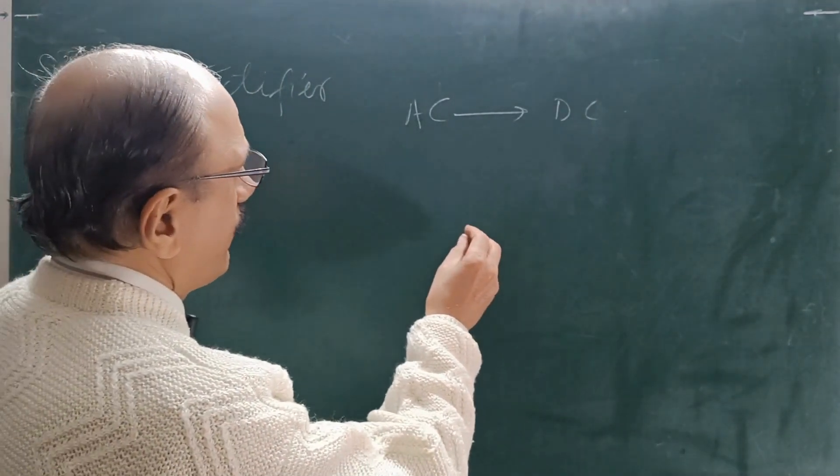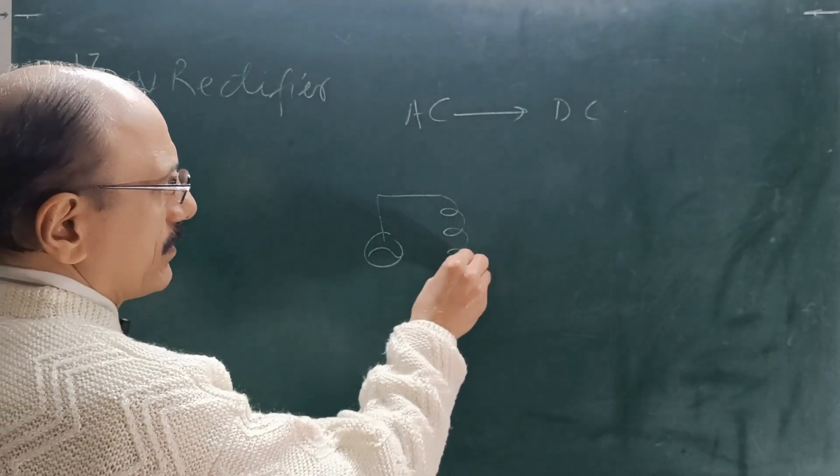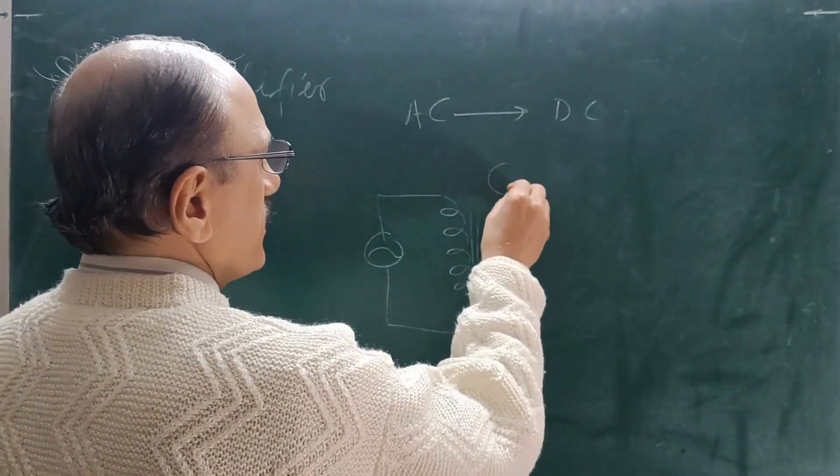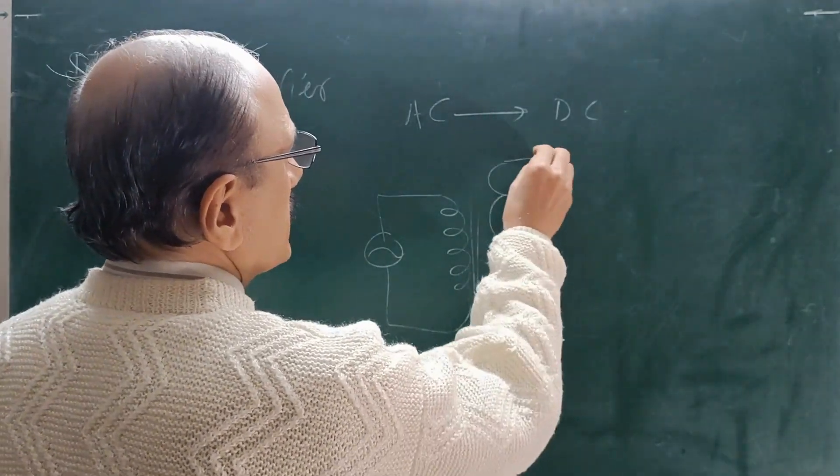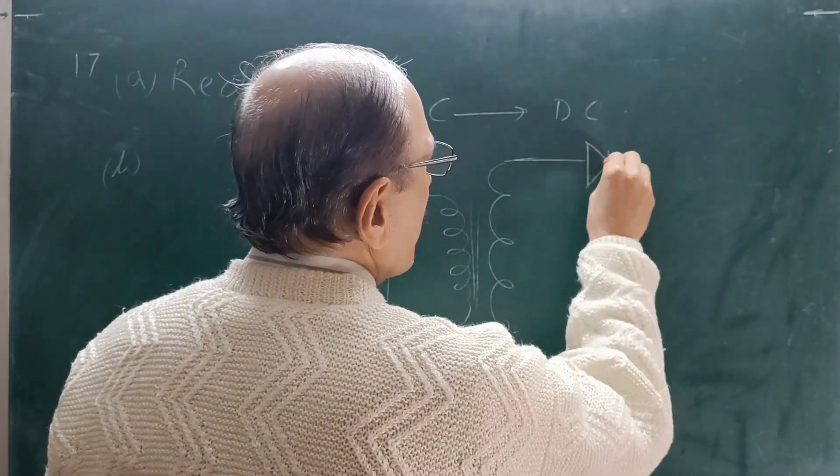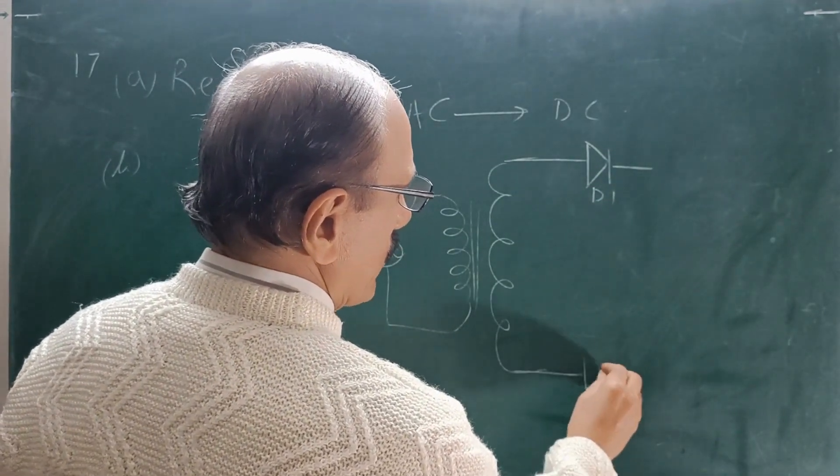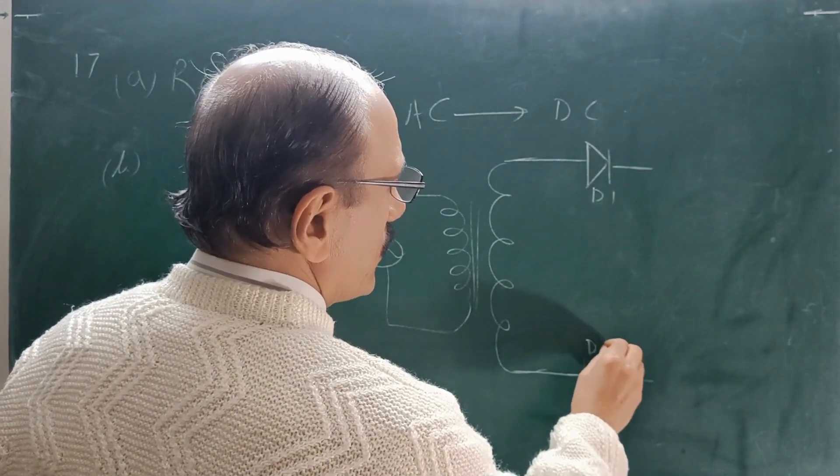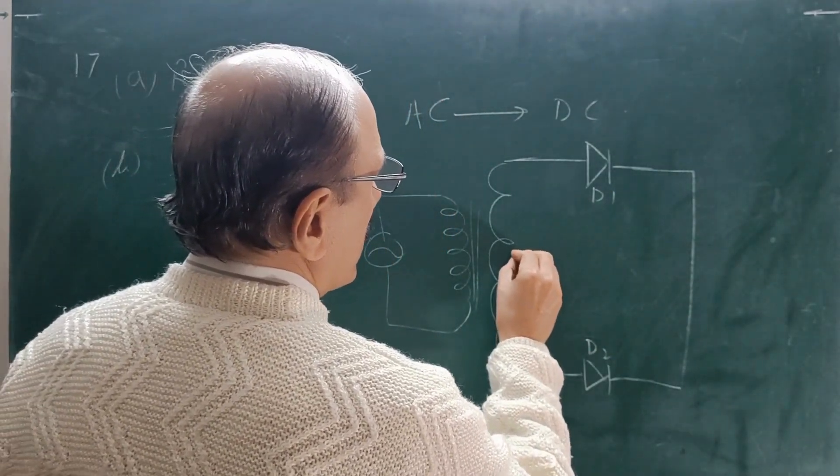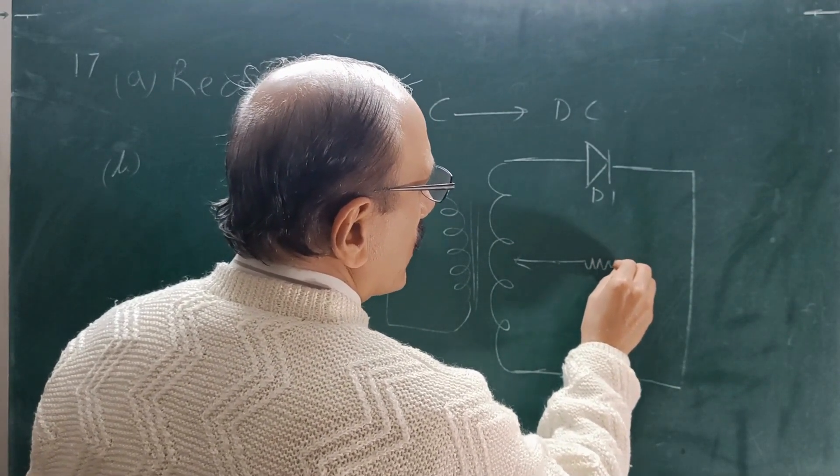Now the second part is you have to draw diagram for full wave rectifier. So full wave rectifier, this is the input AC. Here is the transformer, this is the secondary. Then here you will have one diode D1 and here we will put another diode D2.